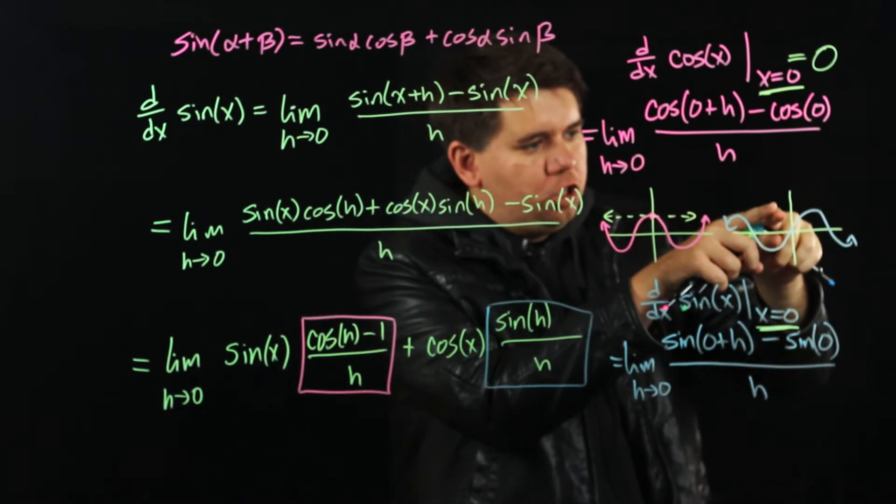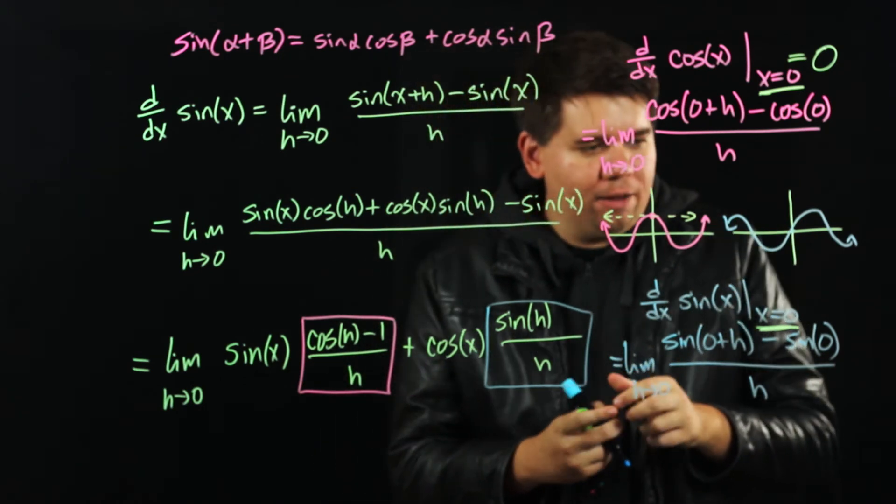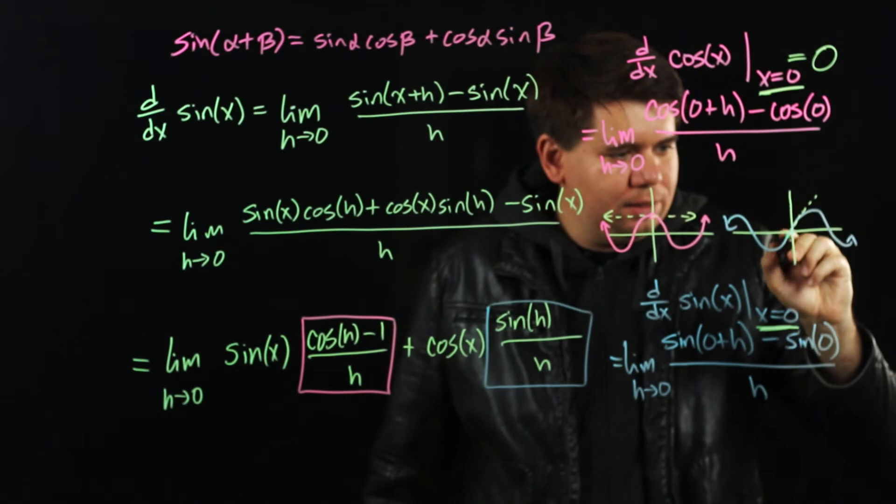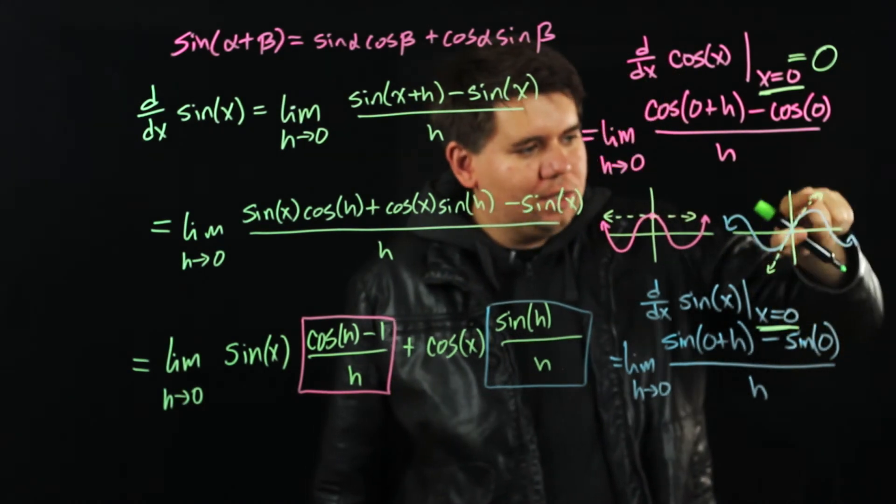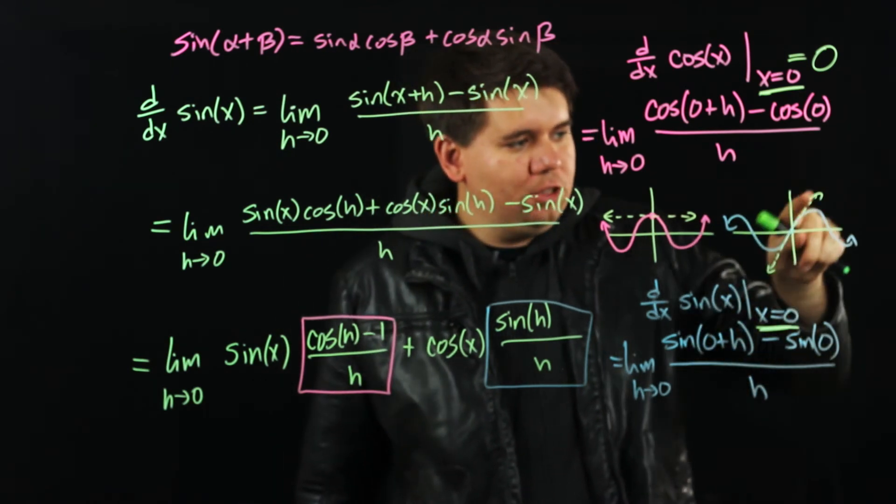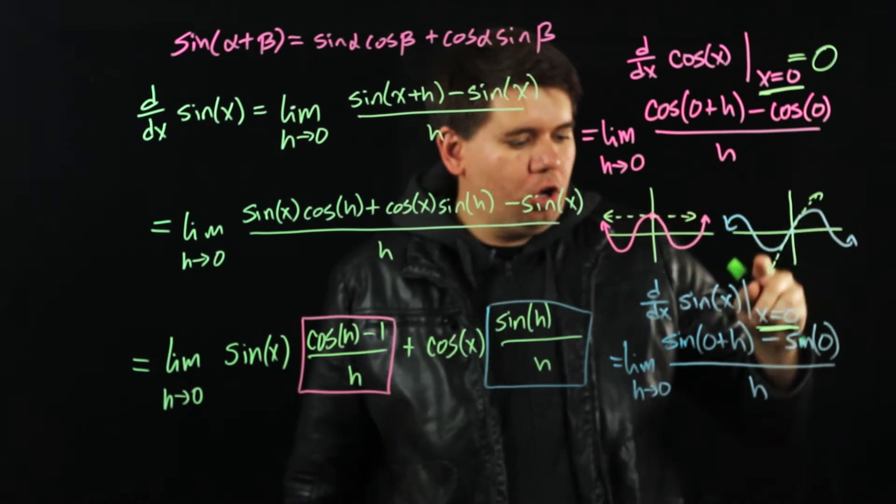And if I was to zoom in to be close to x equals 0, zoom in on the sine graph, you'll notice as you zoom closer and closer, it looks just like the line y equals x. The slope of the tangent line there is just the line y equals x. The slope will be slope 1. So this value will come out to be 1.